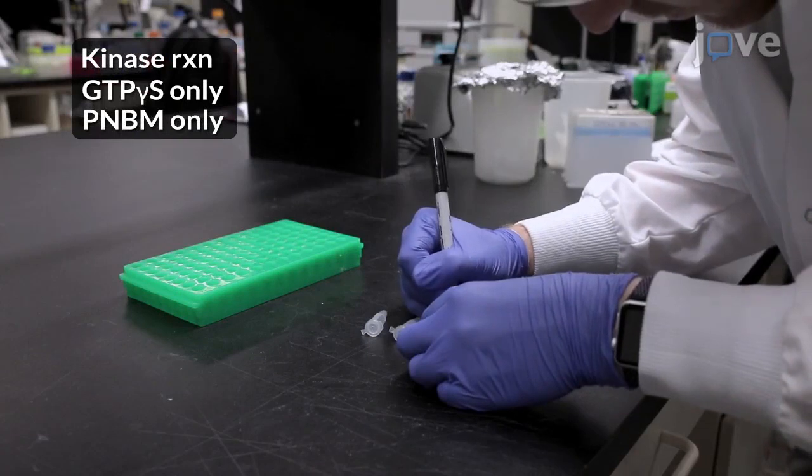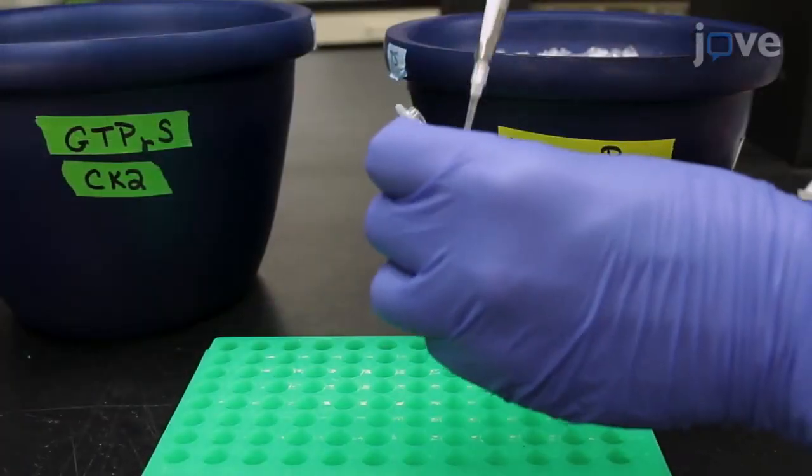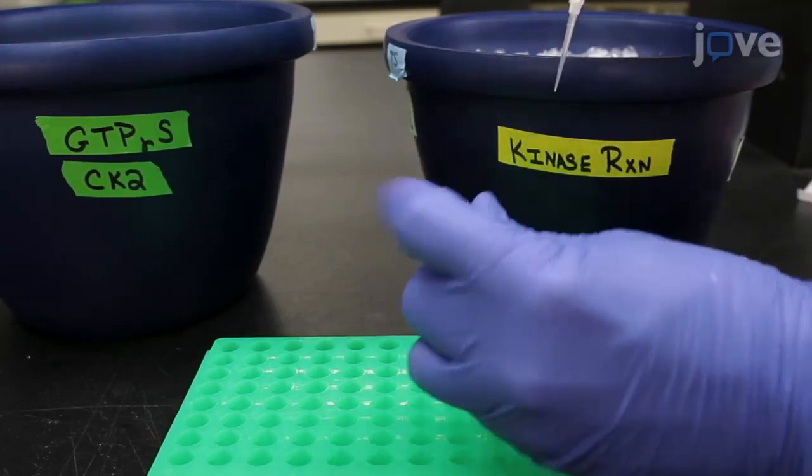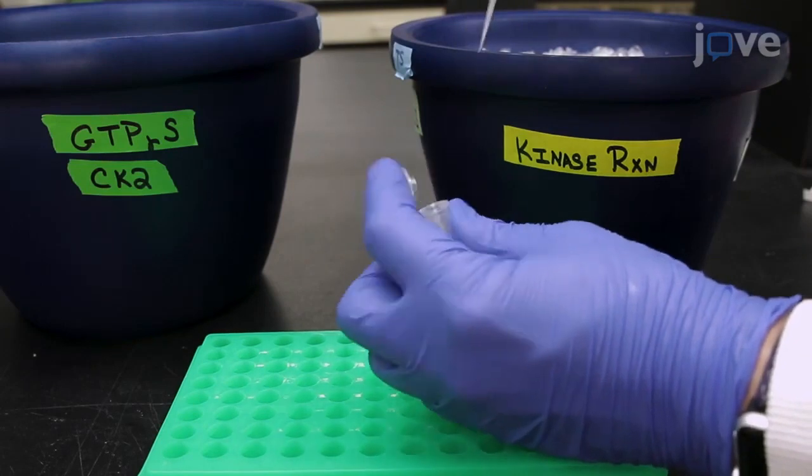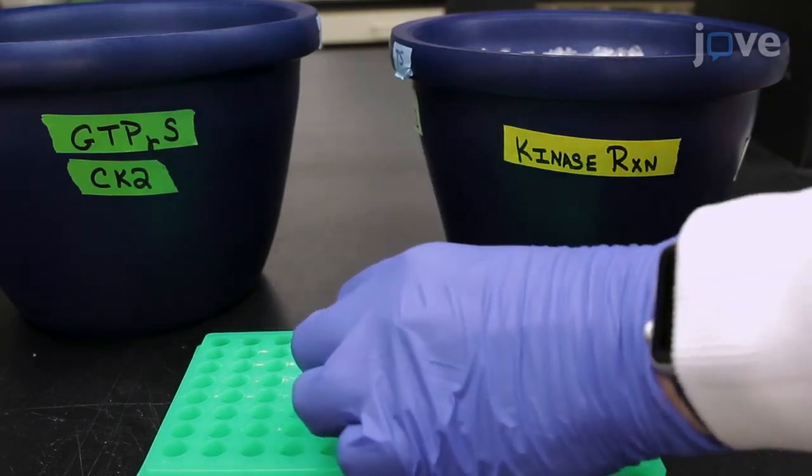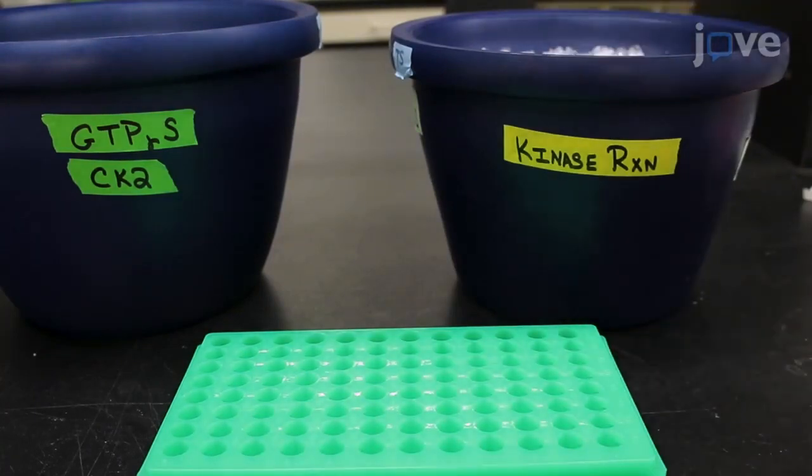First, label each of the three sample tubes as shown here. To the kinase reaction tube, add 2.7 microliters of 2.5 millimolar GTP-γ-S. Flick the tube to mix and immediately place it on ice.